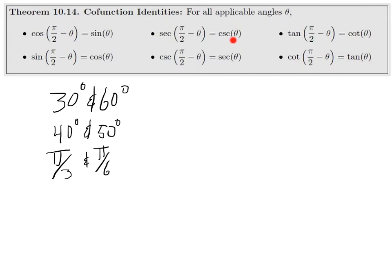It also works for secant and cosecant, and for cotangent and tangent. Notice the co-functions: sine and cosine, secant and cosecant, tangent and cotangent. That's why they are called the co-functions, as well as the complementary angles that are involved.